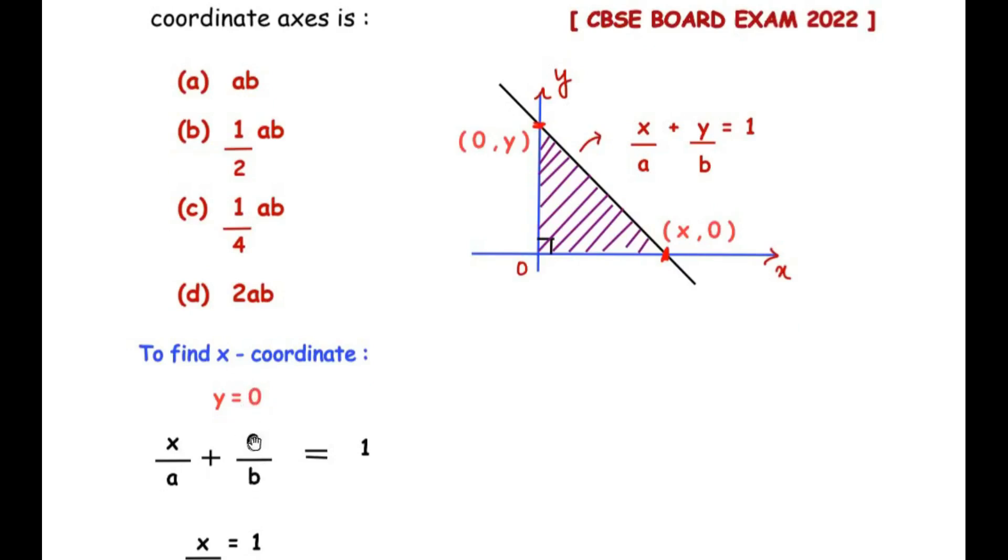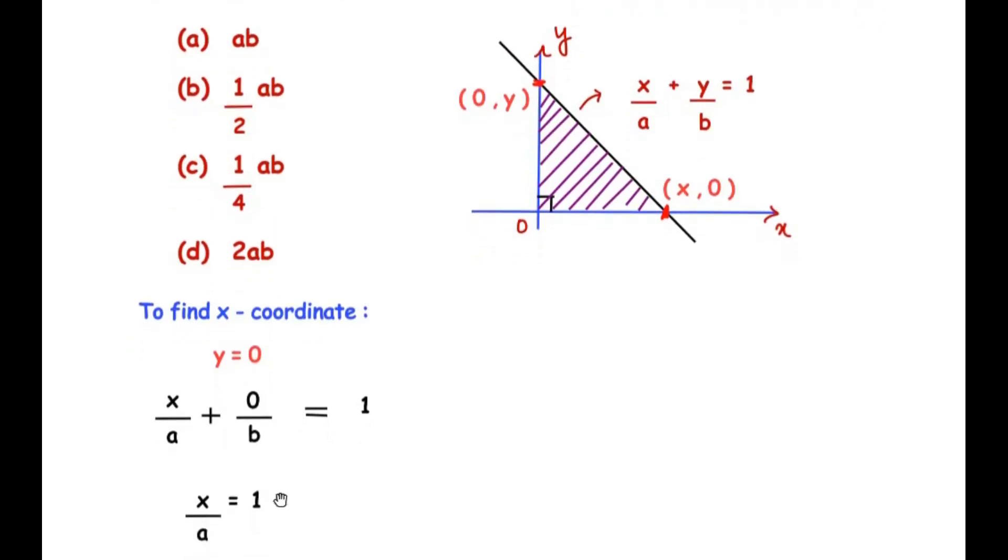So it becomes x over a plus 0 over b equals 1. Now, 0 divided by b is 0 itself, so our equation simplifies as x over a equals 1. Or, taking a on the other side of the equals sign, we get the value of x as a.